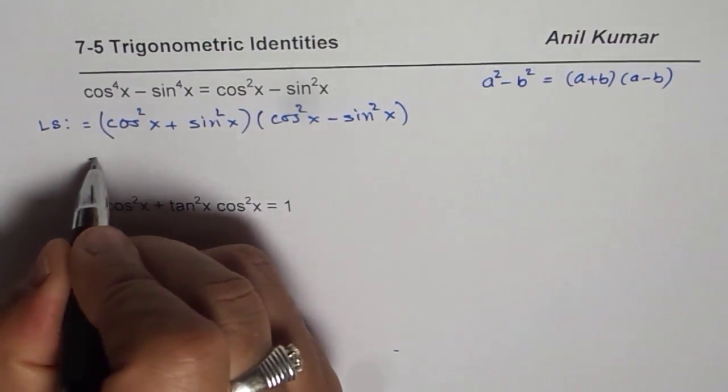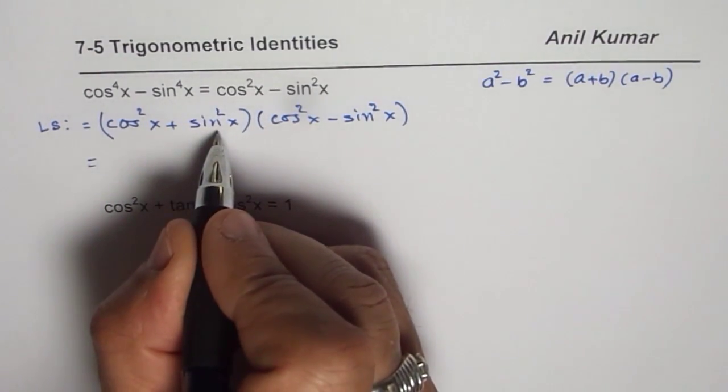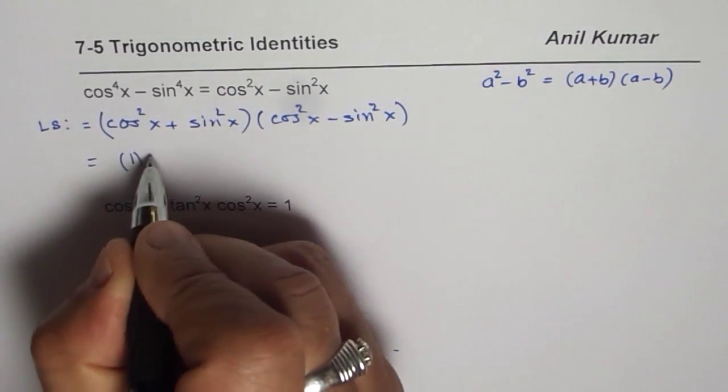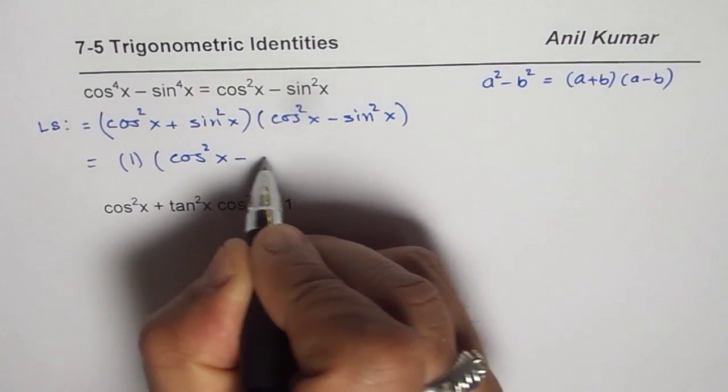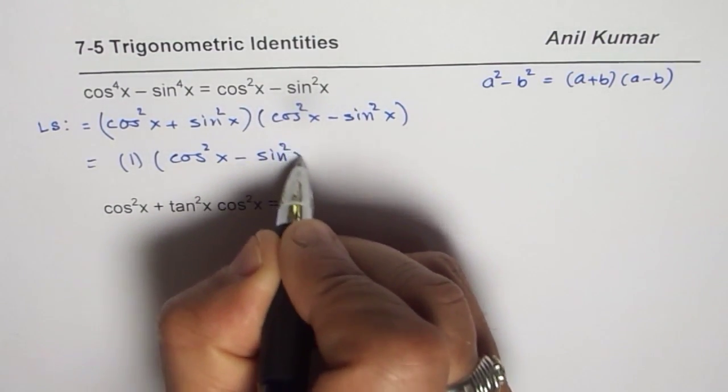Now we know cos square x plus sin square x is 1. So therefore we are left with 1 times cos square x minus sin square x.